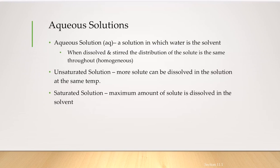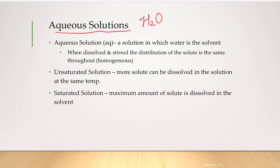Aqueous solutions are solutions made with water as the solvent. The solvent can be water, alcohol, or ethers, but aqueous solutions specifically use water. When dissolved and stirred, the distribution of the solute is the same throughout, making it homogeneous. They can also be classified as unsaturated or saturated.